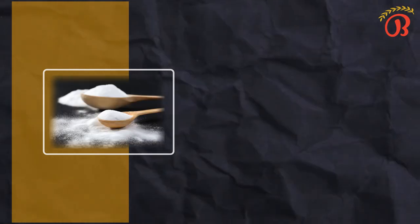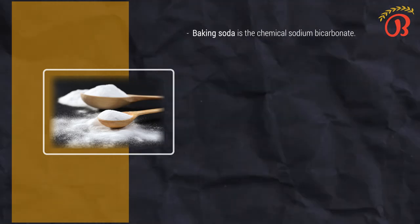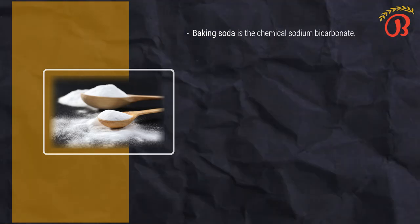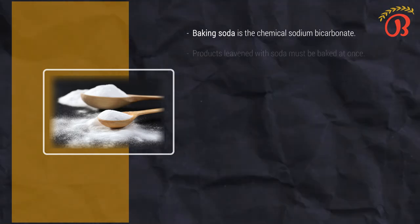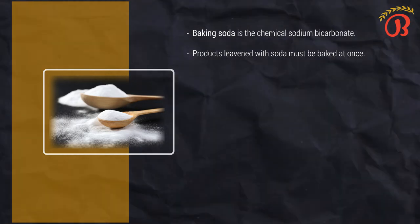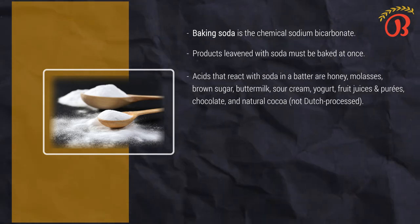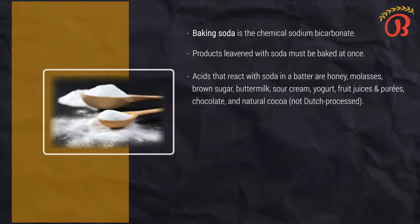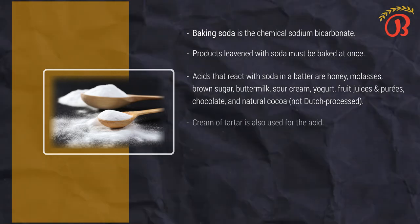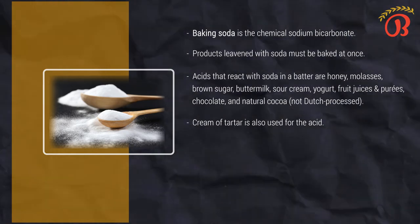Next on the list is baking soda and baking powder. Baking soda is the chemical sodium bicarbonate. If moisture and an acid are present, soda releases carbon dioxide gas, which leavens the product. Heat is not necessary for the reaction to take place. For this reason, products leavened with soda must be baked at once or the gases will escape and leavening power will be lost. Acids that react with soda in a batter include honey, molasses, brown sugar, buttermilk, sour cream, yogurt, fresh juices and purées, chocolate, and natural cocoa. Sometimes cream of tartar is also used as the acid. The amount of soda used in a formula is generally the amount needed to balance the acid.